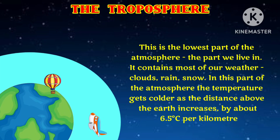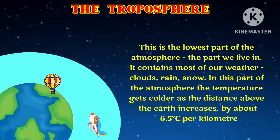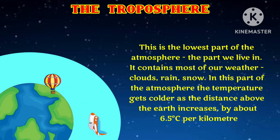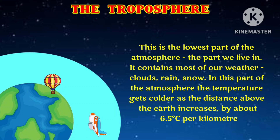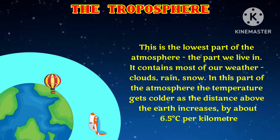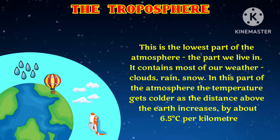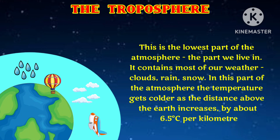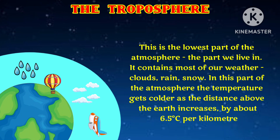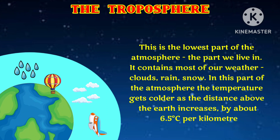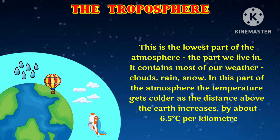This is the lowest part of the atmosphere — the part we live in. It contains most of our weather: clouds, rain, snow. In this part of the atmosphere, the temperature gets colder as the distance above the earth increases, by about 6.5 degrees Celsius per kilometer.